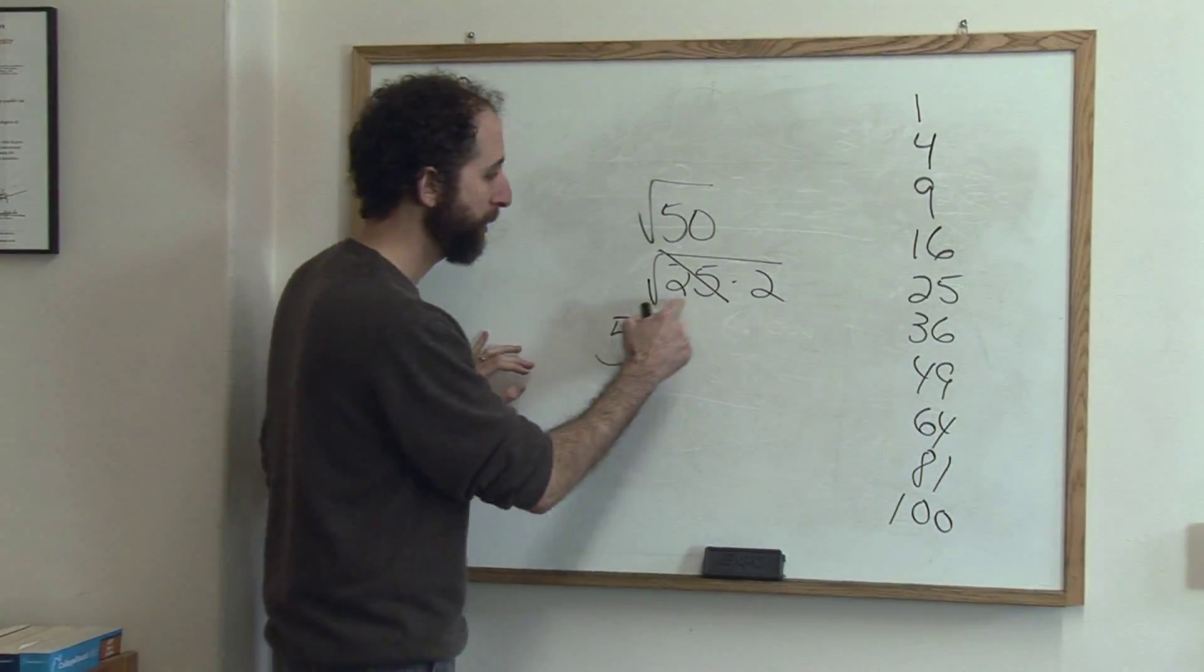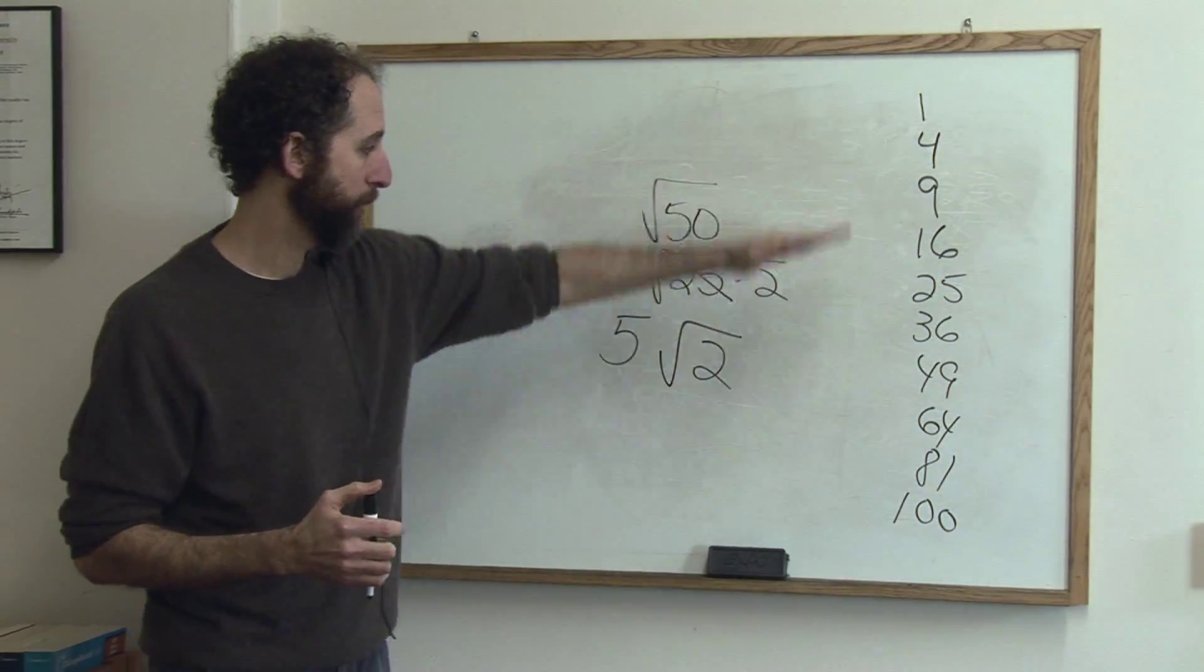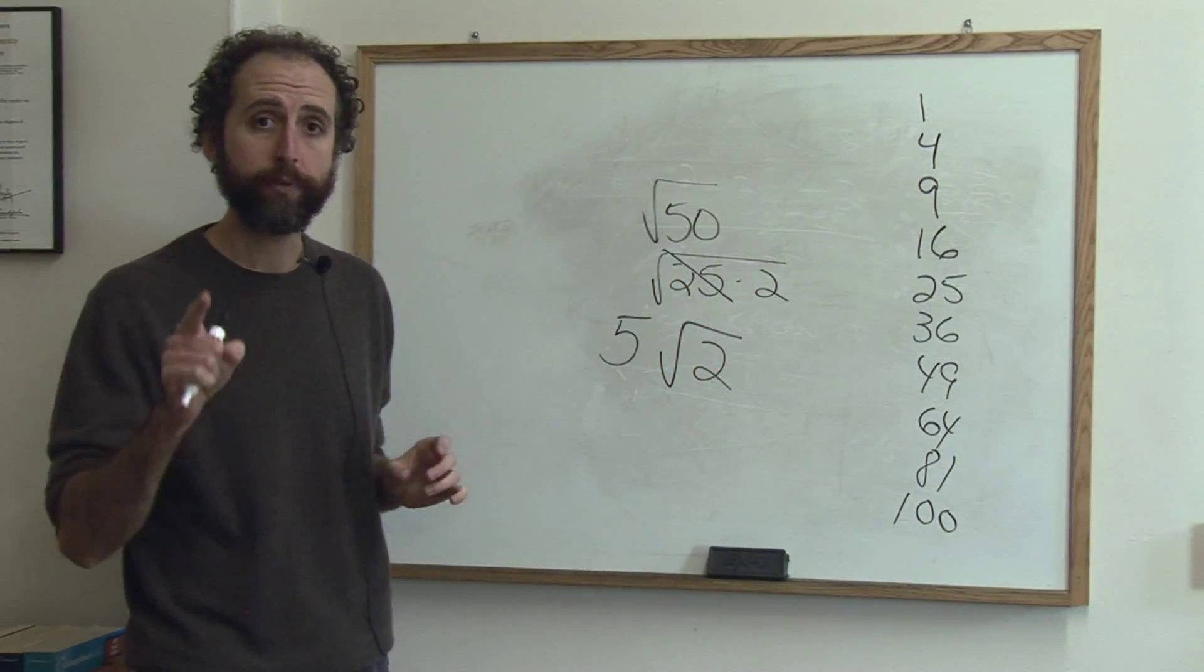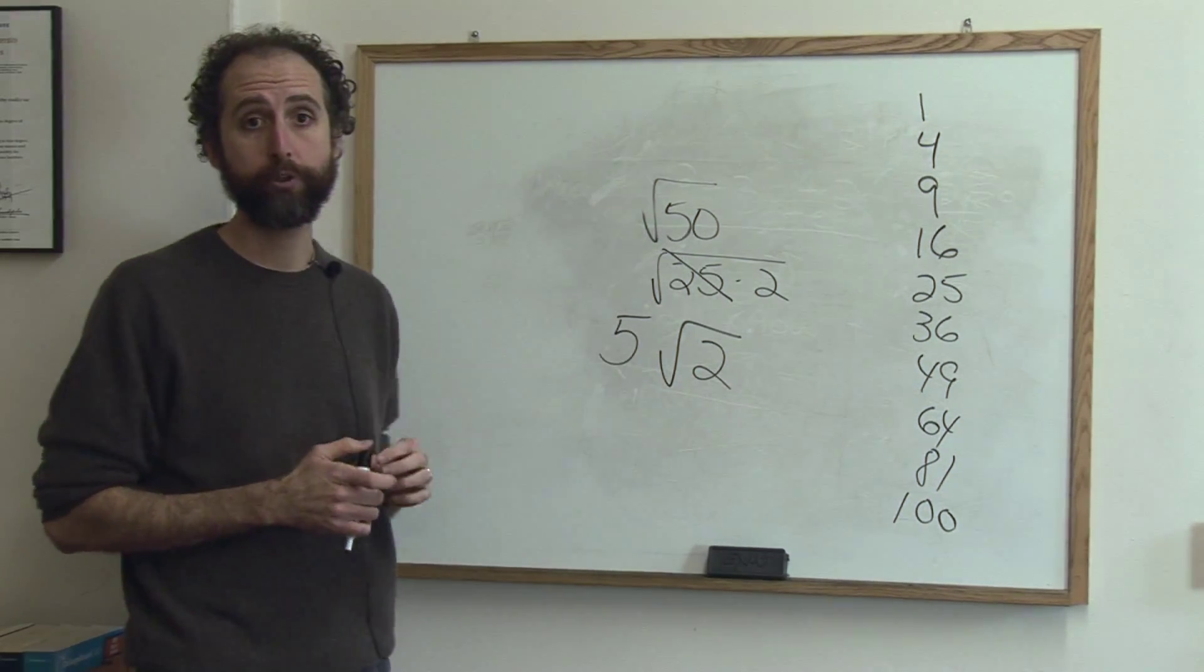And we're left with, inside, square root of 2. Square root of 2 doesn't simplify. Nothing goes into it. It's a final answer. So the simplified version of square root of 50 is 5 square root of 2.